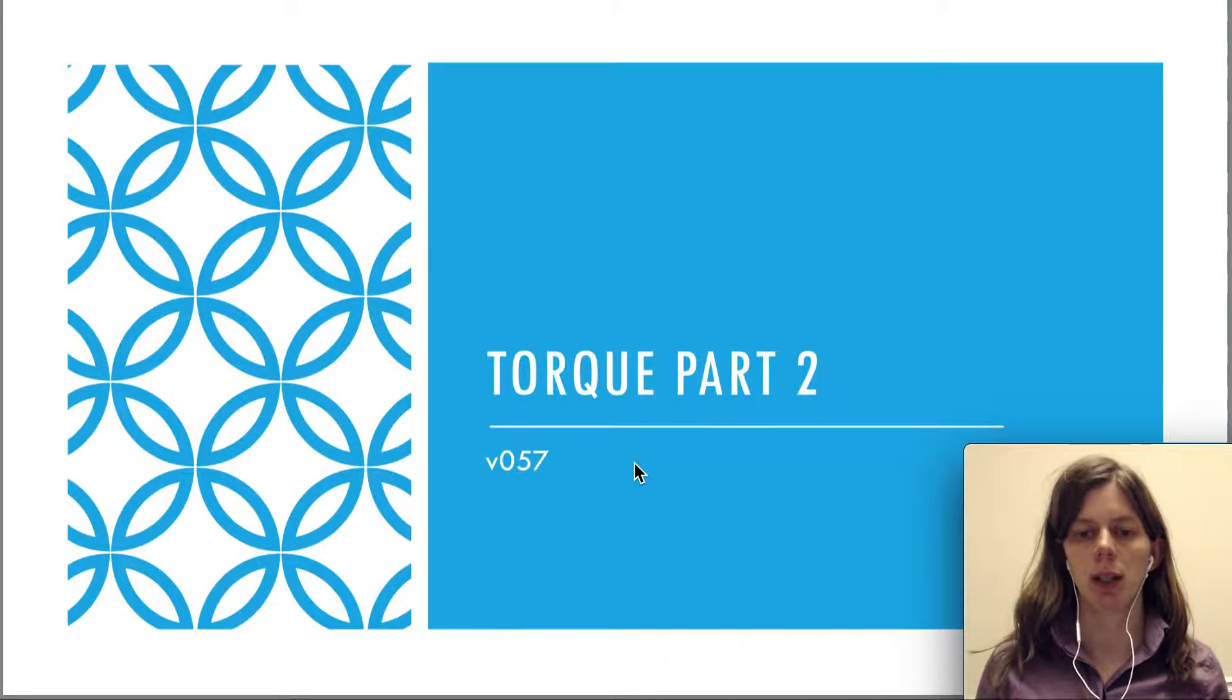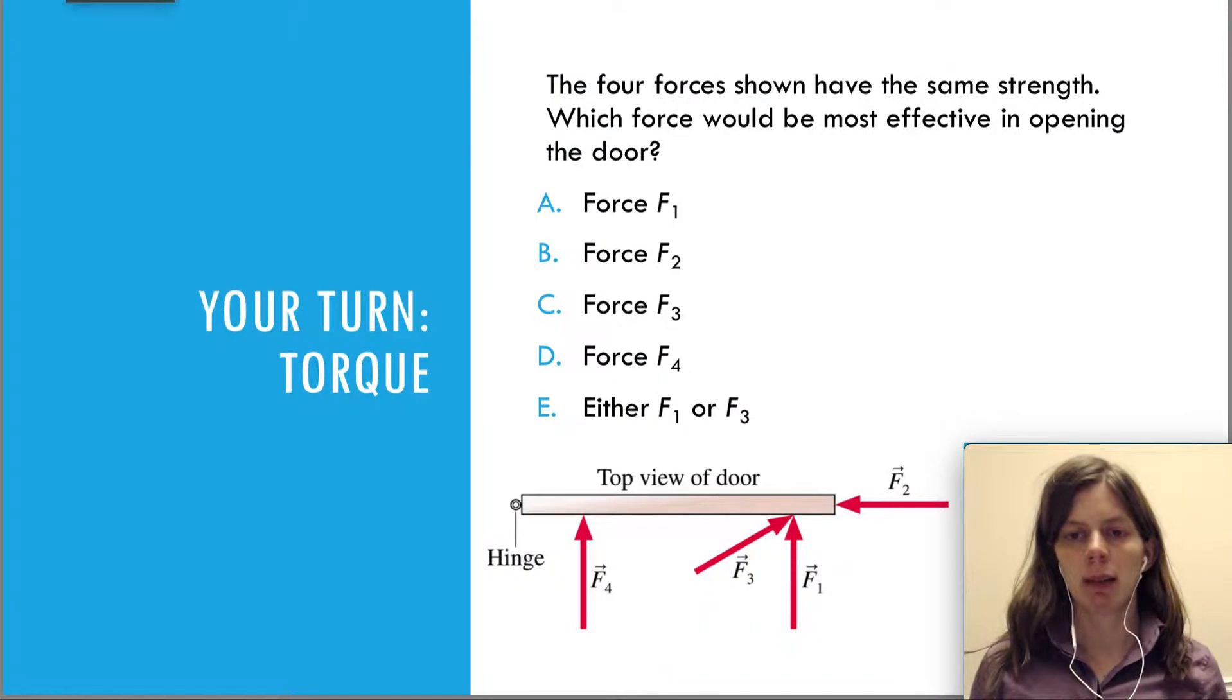Hello, this is video 57. We're going to continue our discussion on torque. So to recap what we just talked about, I have a question. It says the four forces shown have the same strength. Which force would be most effective in opening the door? We just talked about torque and how it's the tendency of a force to cause a rotation. So we have four different forces here. Which one would cause more rotation? Which one would exert more torque?